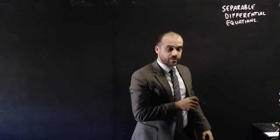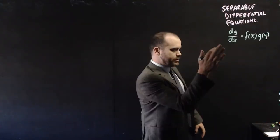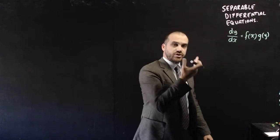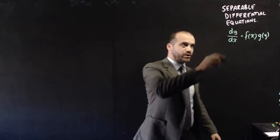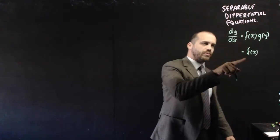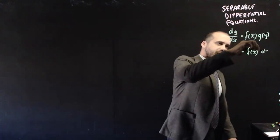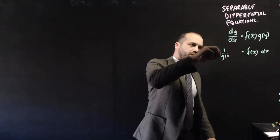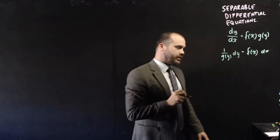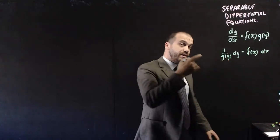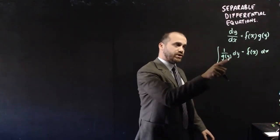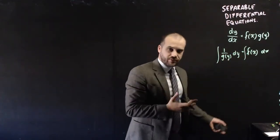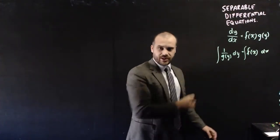A differential equation is separable if you can write it as dy/dx equals some function of x times some function of y. To solve it, rearrange so that the g(y) term moves to the other side as 1 over g(y) with respect to y, and f(x) stays on the other side with respect to x. Then take the integral of both sides, integrate, rearrange, and get y equals something.